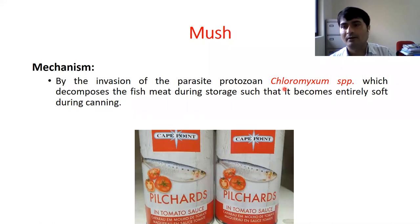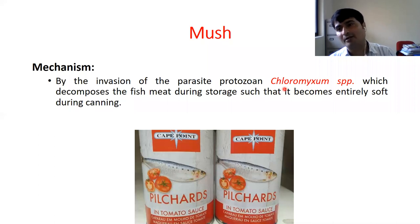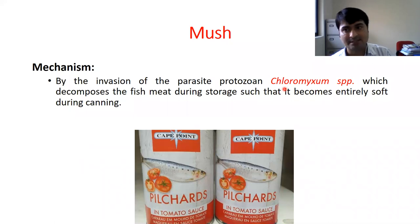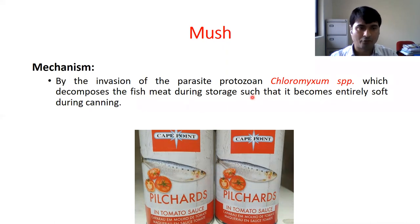This parasitic protozoan name — Chloromyxum species — you have to remember, because it comes up in most competitive exams. It is a parasitic protozoan. It invades the fish muscles and decomposes the fish meat from inside during the canning process. If we are using such a species, that fish will be very soft.